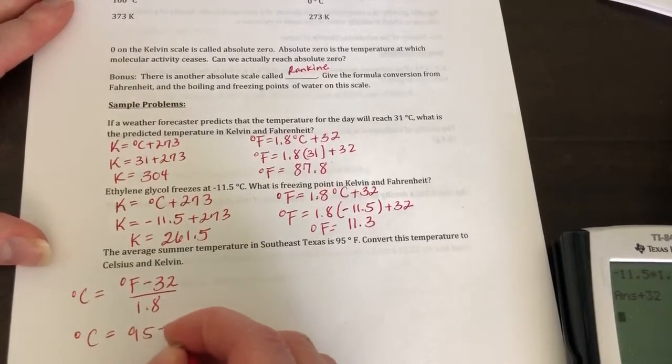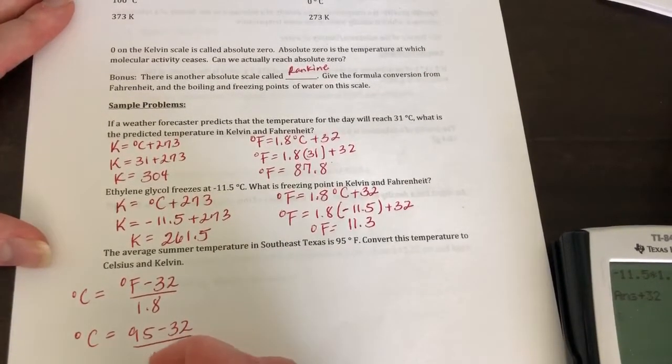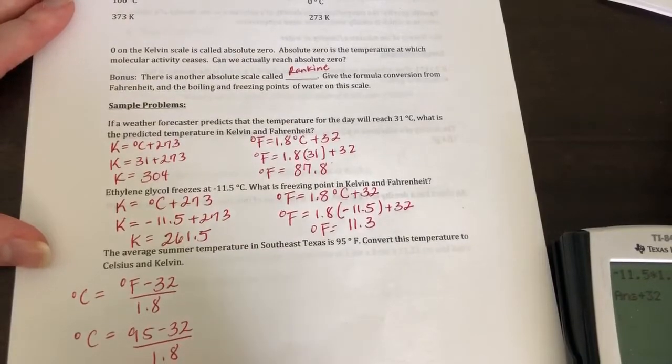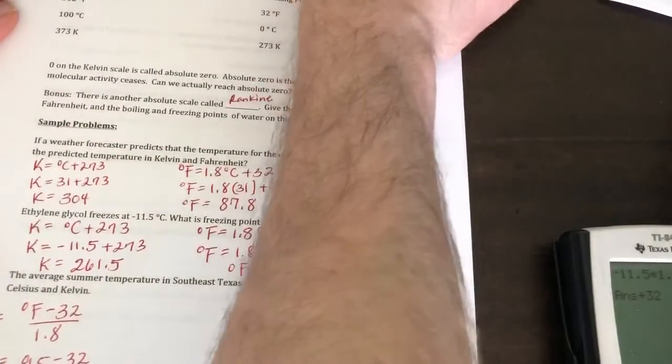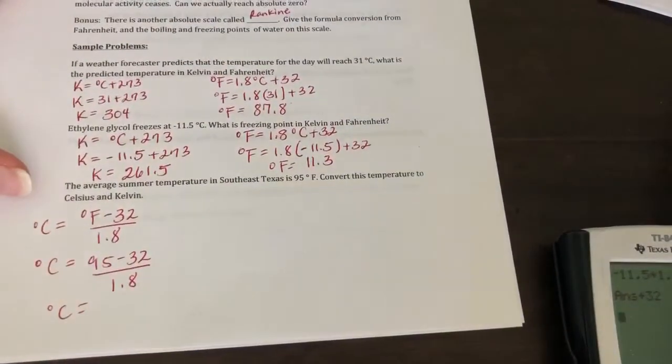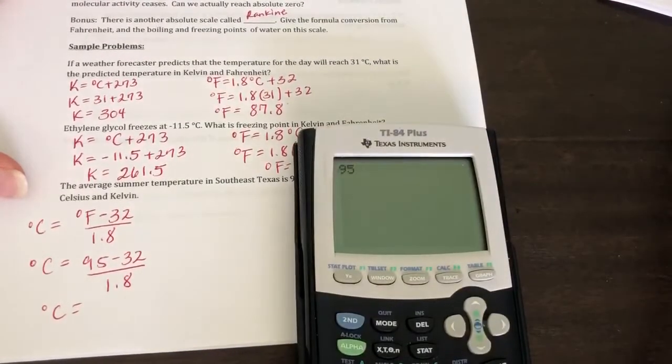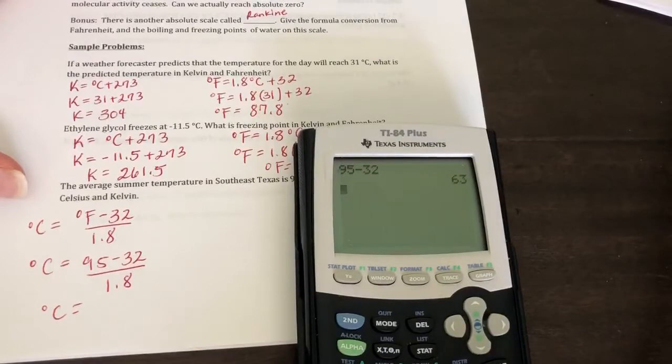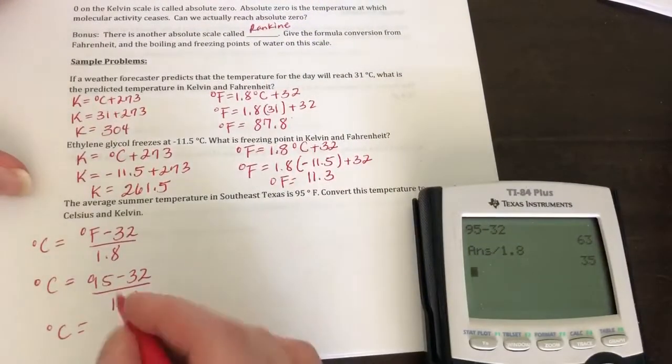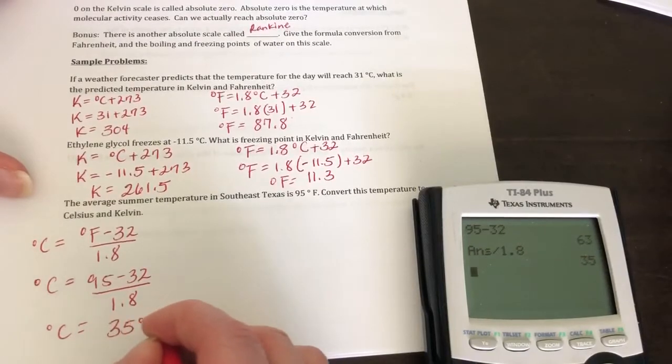So I'm going to do 95 minus 32, I'm going to hit enter and then divide by 1.8 or use parentheses. So you get 35 degrees Celsius.